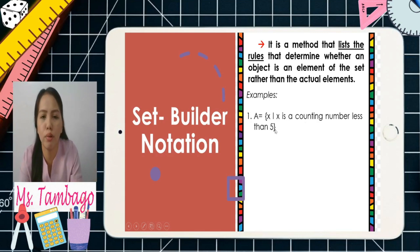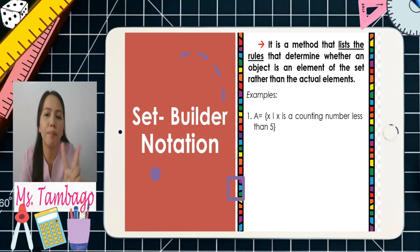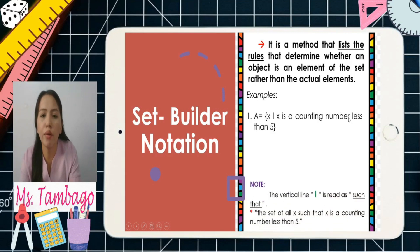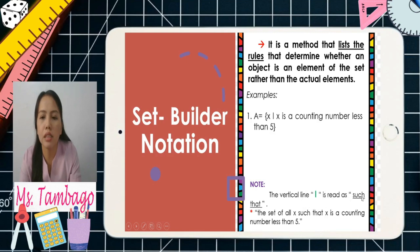...x slash x is a counting number less than five, close brace. This combines the roster method and verbal description. The vertical bar in the middle is read as 'such that.' So we read it as: the set of all x such that x is a counting number less than five.